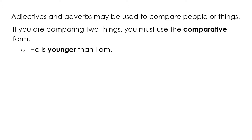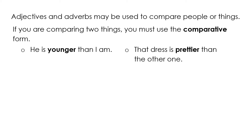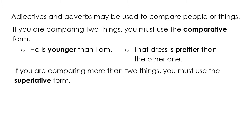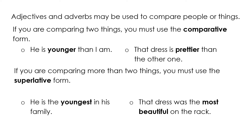For example: He is younger than I am. That dress is prettier than the other one. If you are comparing more than two things, you must use the superlative form. He is the youngest in his family. That dress was the most beautiful on the rack.